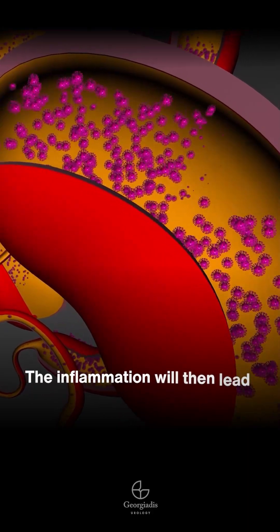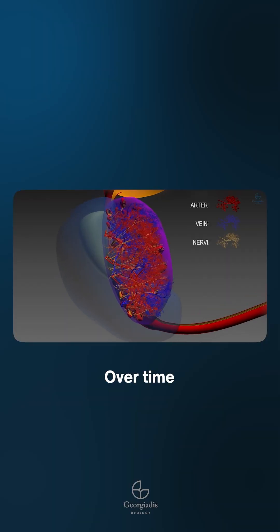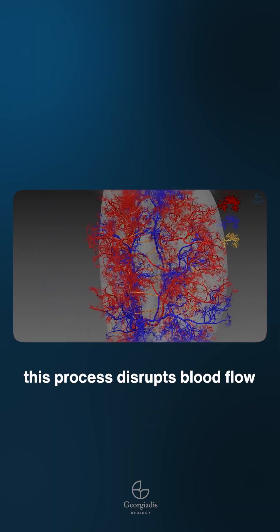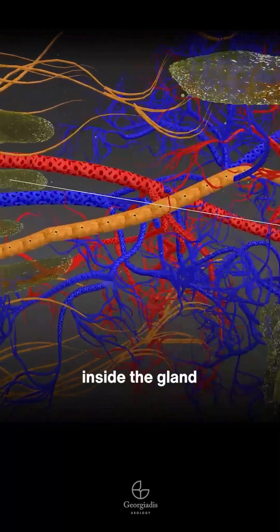The inflammation will then lead to the thickening of the walls of the prostate. Over time, this process disrupts blood flow, causes congestion, and traps microorganisms inside the gland.